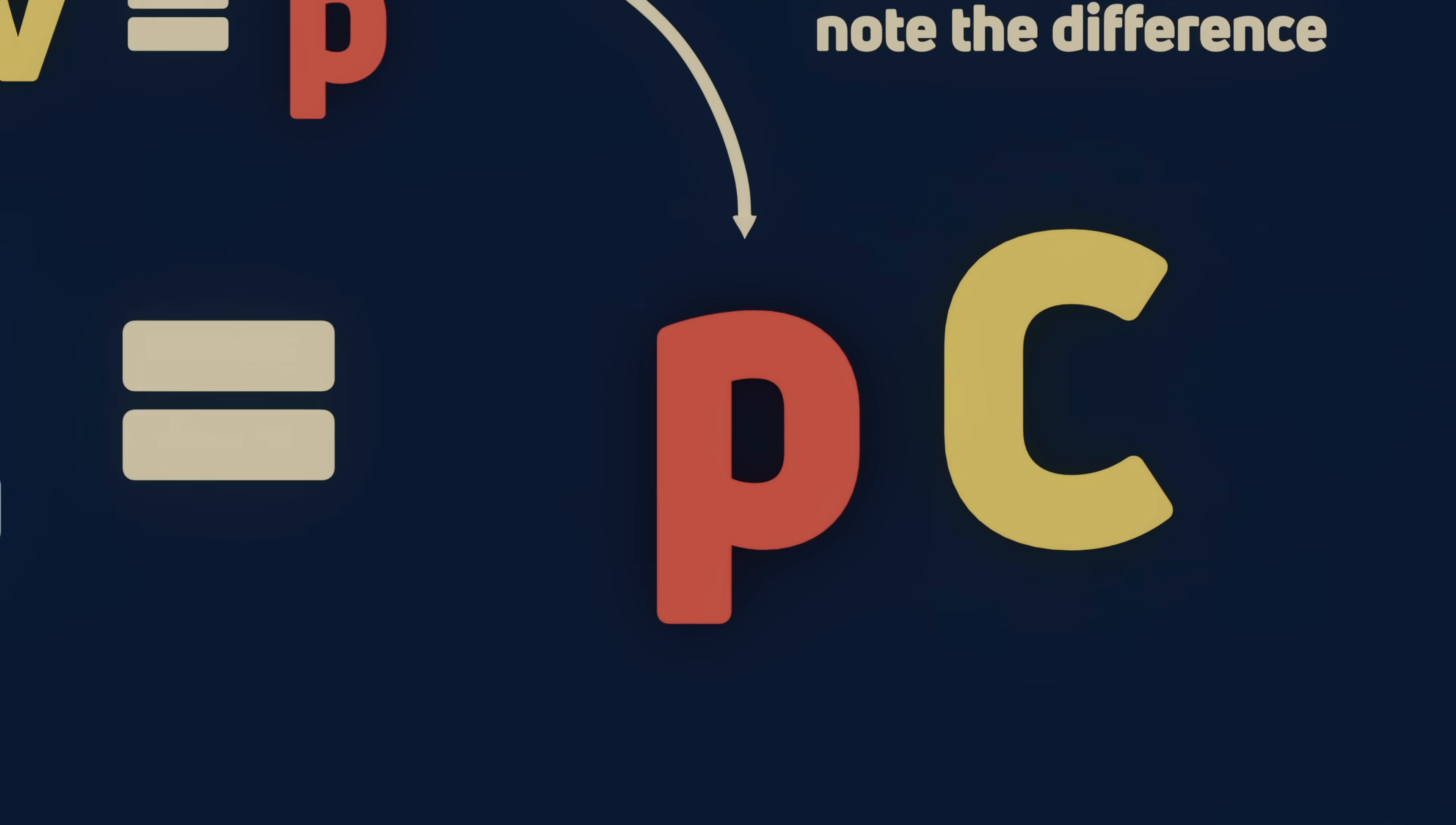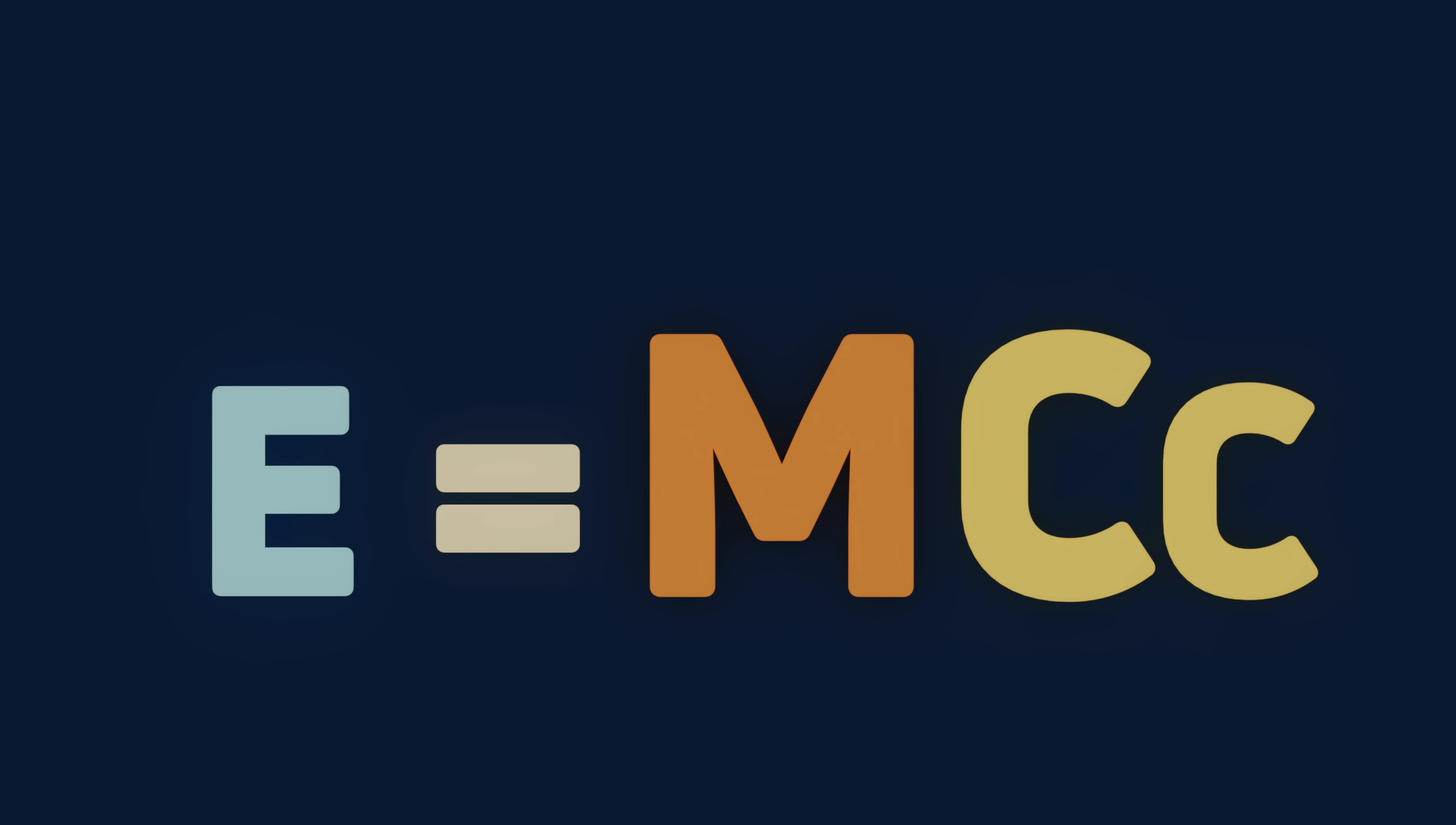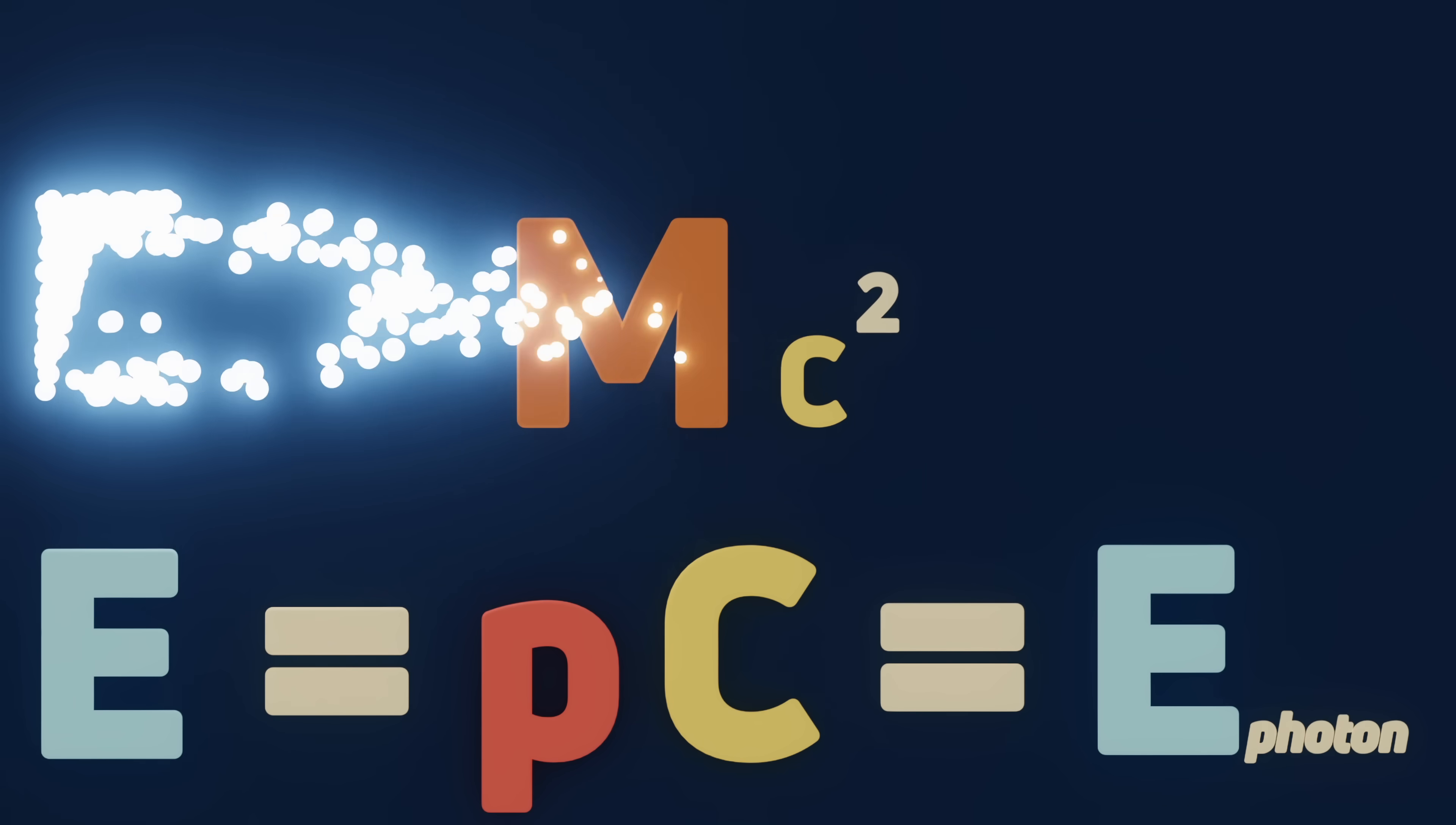Returning again to our equation, I start to see something familiar. Yeah, momentum times c is equal to the energy of a photon or light. E equals mc squared is another way of describing the light energy that would be released if we were to convert all of the energy stored as mass into massless pure energy or photons.